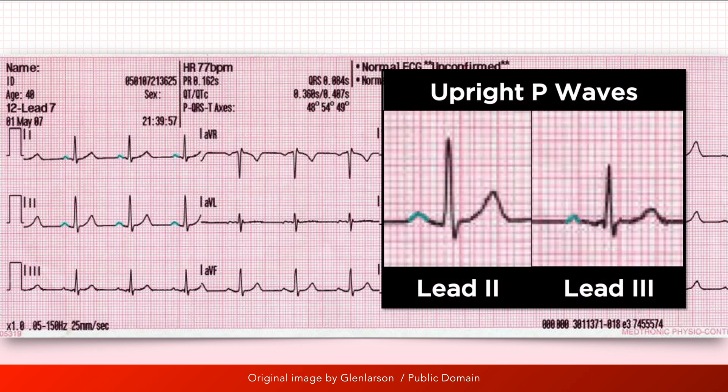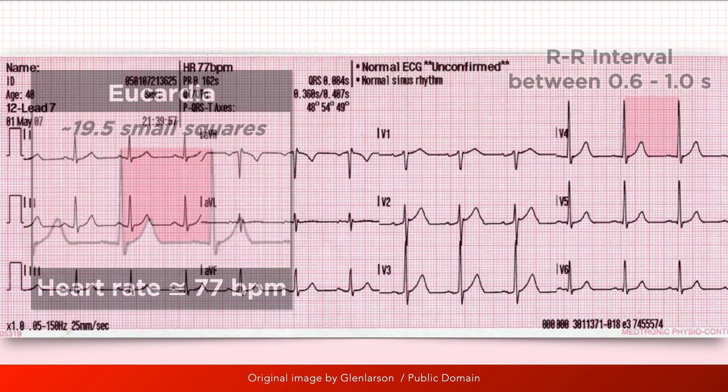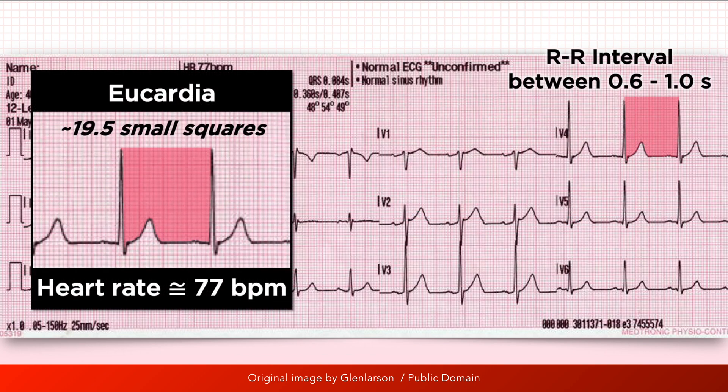Another defining feature of sinus rhythm is P waves that are upright in leads 2 and 3, and have a normal wave morphology that remains constant. The heart rate in a patient with sinus rhythm is between 60 to 100 beats per minute, which correlates with an RR interval between 0.6 and 1 second. And finally, the rhythm is regular — that is, the RR interval remains constant.